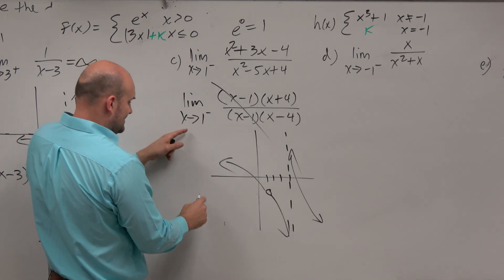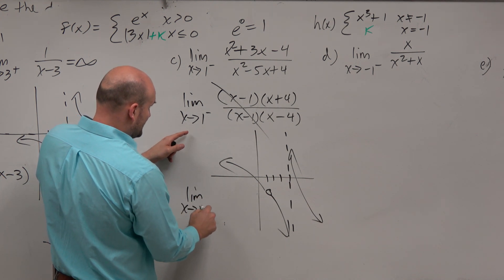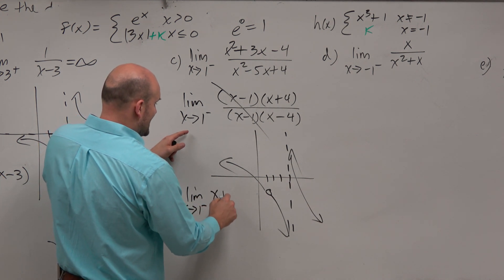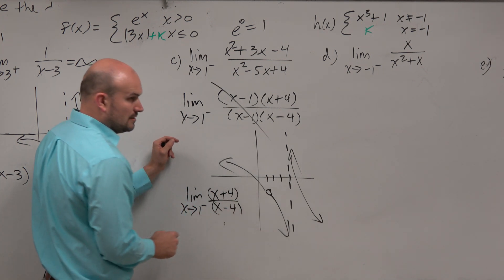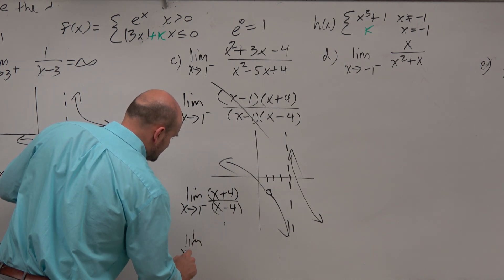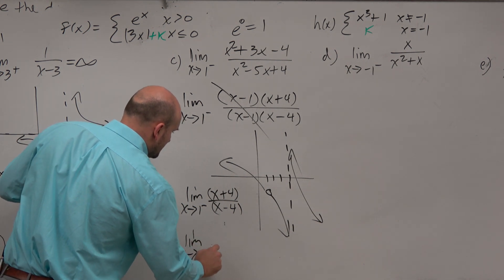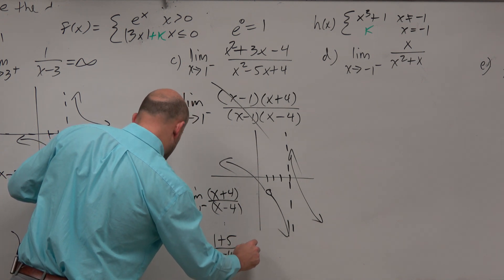So if I want to check this left hand limit at a hole, all I'm going to do is just apply direct substitution with x plus 4 over x minus 4. So therefore, that's equal to, I'm just plugging 1 plus 5 over 1 minus 4.